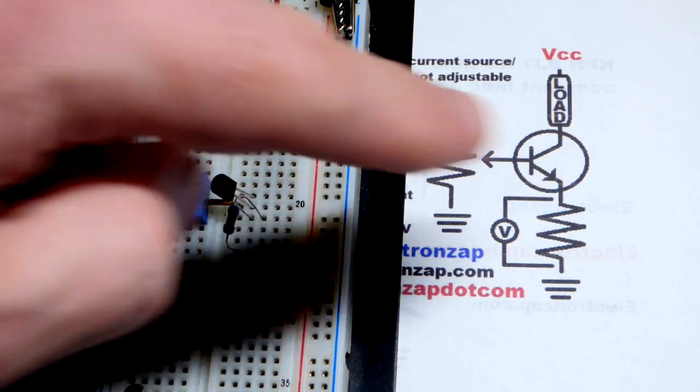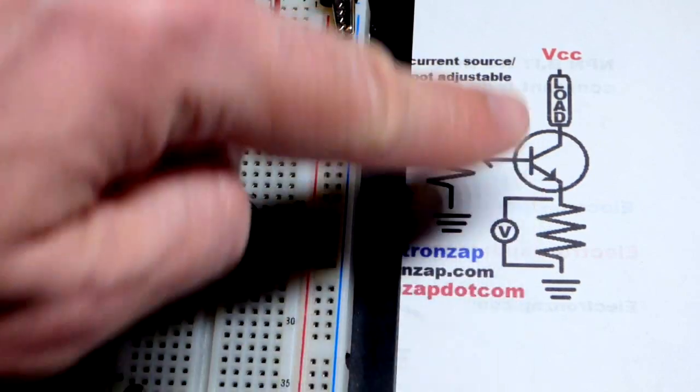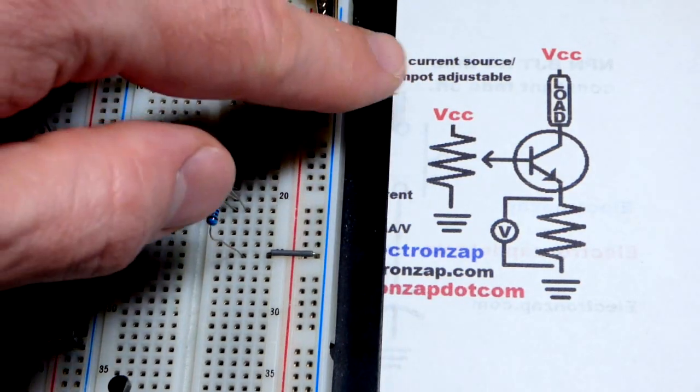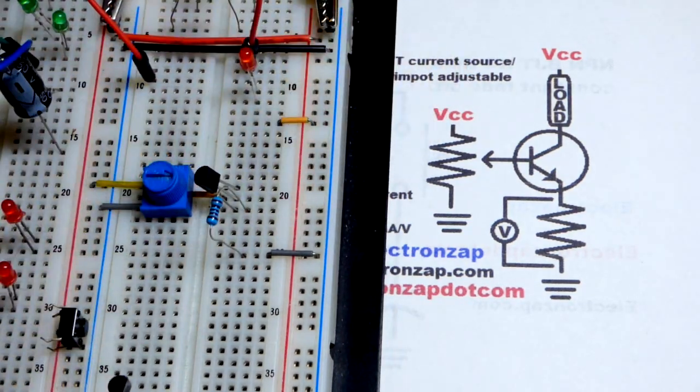It's actually a sink, as you can see here. It's towards the more negative side of the load. But we still call it a current source. Anything that sets current is usually called a current source.